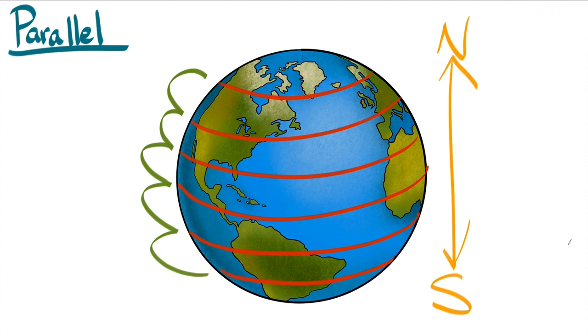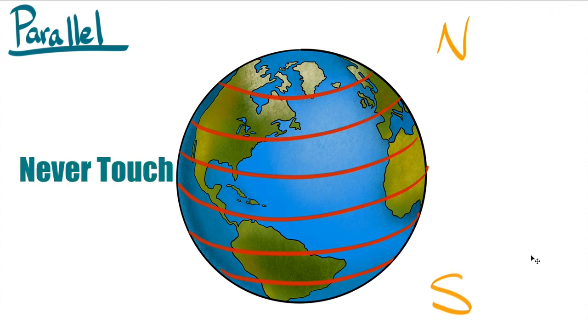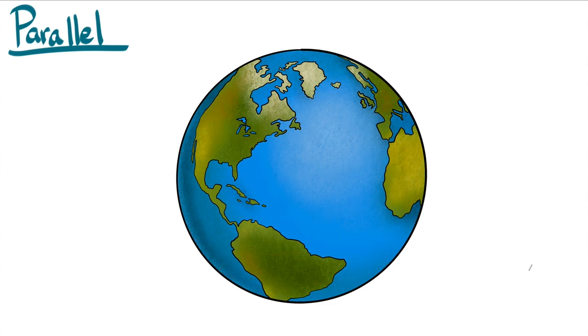So in conclusion, lines that go around the earth sideways never touch each other. They run parallel to each other, so their real name is lines of latitude. But because they run parallel to each other, we often call them parallels.